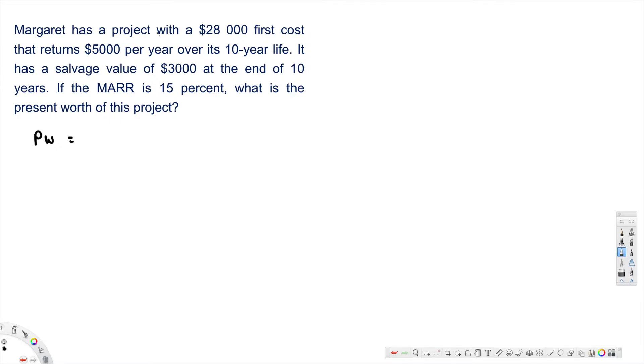Margaret has a project with a $28,000 first cost, so we have first cost right here. It means negative $28,000 plus $5,000 per year over 10-year life.